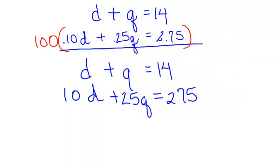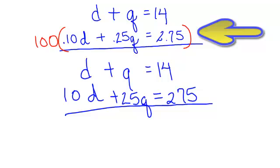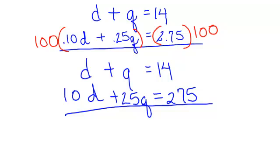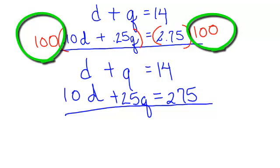100 times 0.25q is 25q equals 100 times 2.75 is 275. I have no decimal points. They weren't bad, but I prefer not to have them. Was it okay that I multiplied everything by 100? Yes, because I did it to both sides. I multiplied the left side by 100. I also multiplied the right side by 100. I just wrote it as one big parenthesis, but I did multiply both sides by 100.